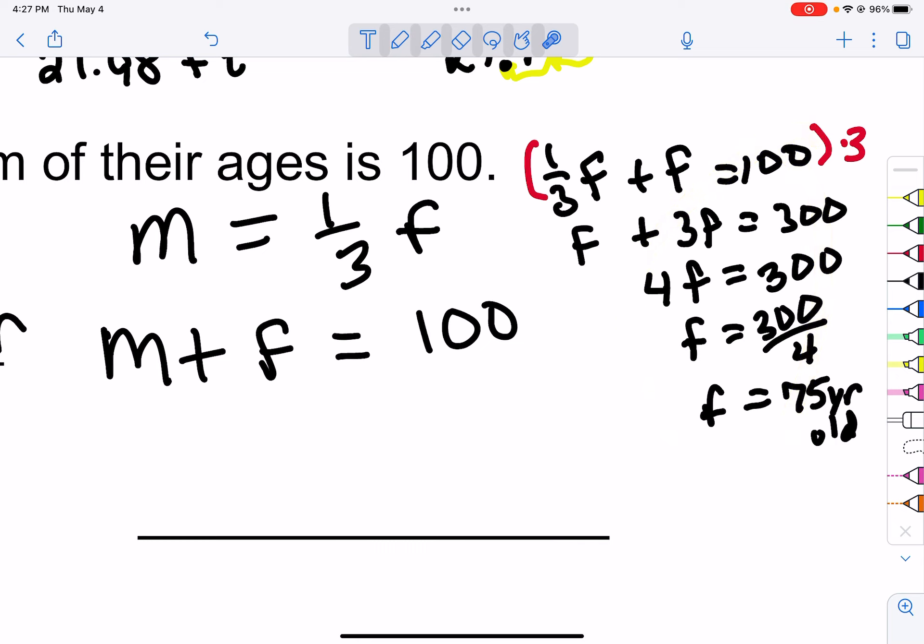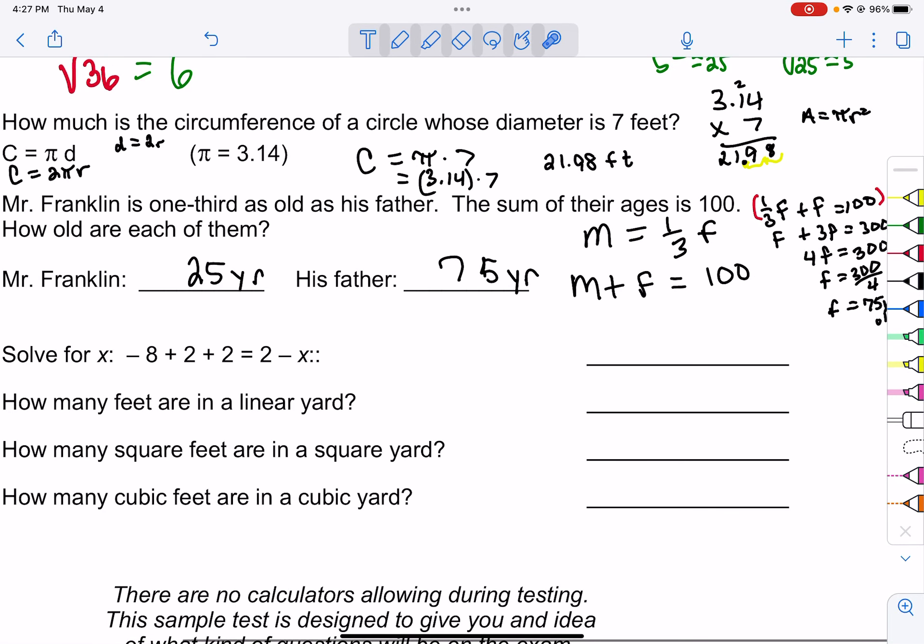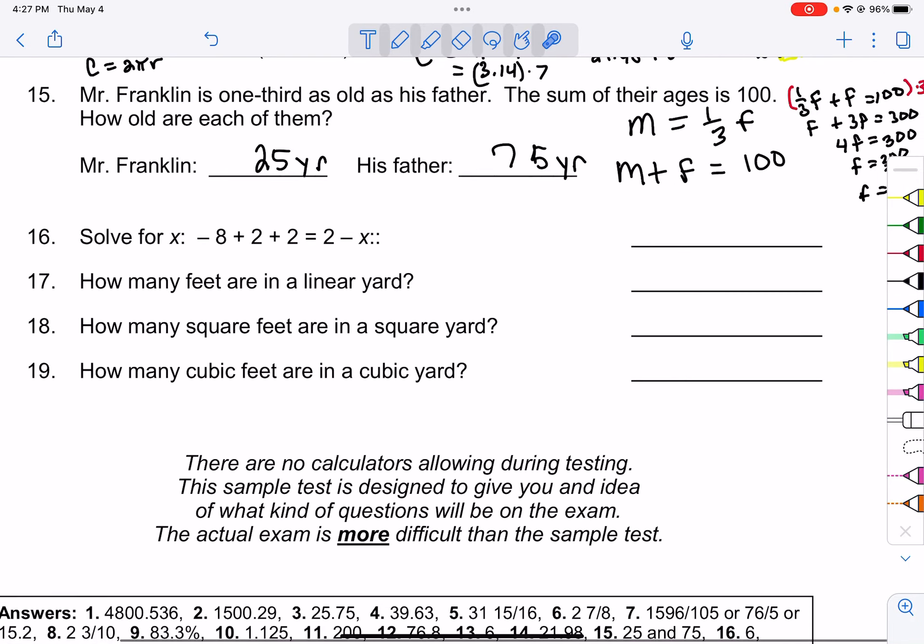Now you can use logic for problems like this. You don't have to do algebra. You can start out thinking, oh well, what if the son is 20? That's a third of the father, so the father would be 60. That only adds up to 80, so they must be a little older to add up to 100. So you can use logic; you don't have to use algebra. This is the more algebraic notation. So the sum of their ages would be 100, and Mr. Franklin's a third of his father.